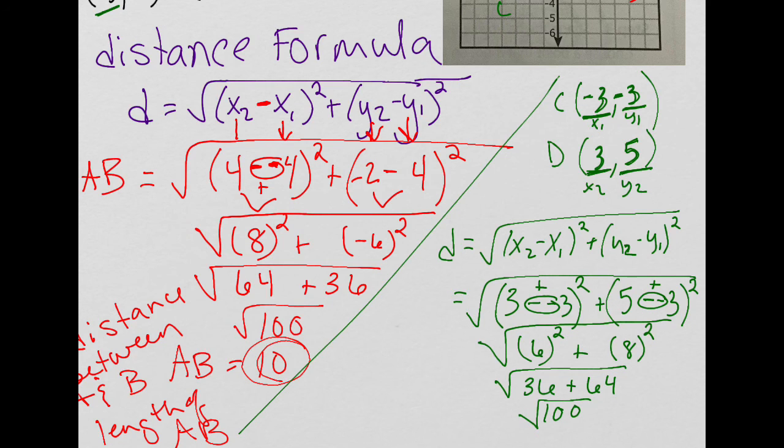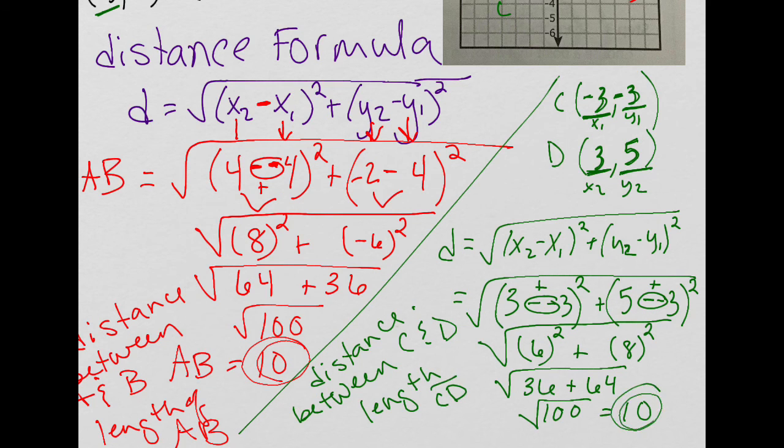And the square root of 100 is 10. So the distance between the point C and the point D, which is the same thing as the length of the segment CD, is 10.